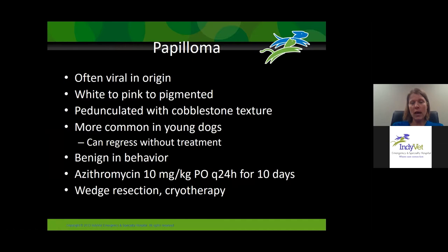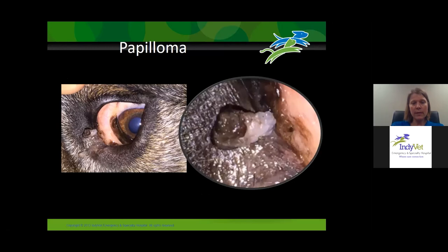Papillomas are another tumor we see. These are often viral in origin. They can be white to pink to slightly pigmented and tend to be pedunculated with a cobblestone texture. They're more common in young dogs, and sometimes the dog will also have oral papillomas or multiple papillomas on the eyelid. They can regress without treatment and tend to be benign. You can treat these with azithromycin, which has been shown to cause regression, or with wedge resection and cryotherapy.